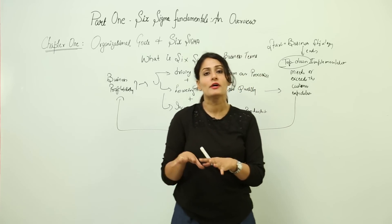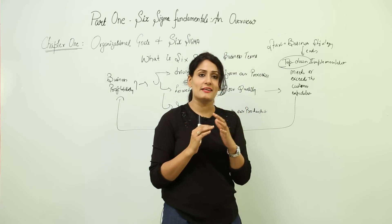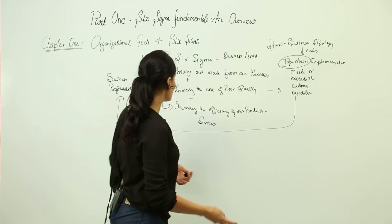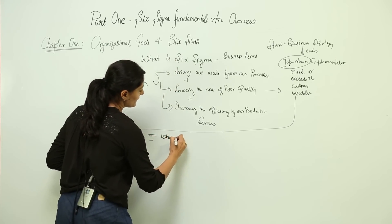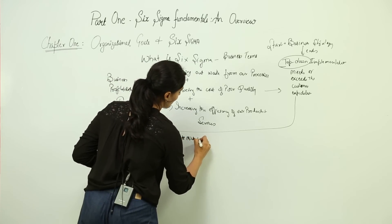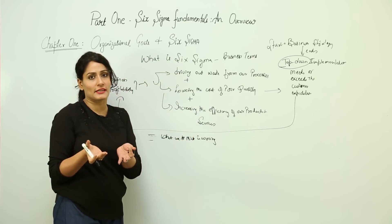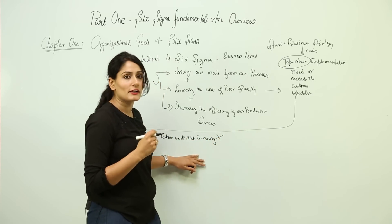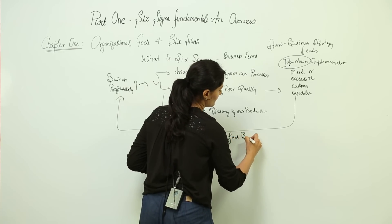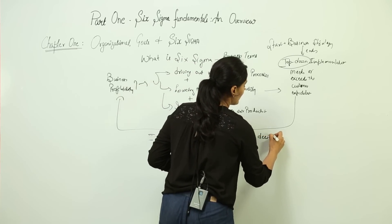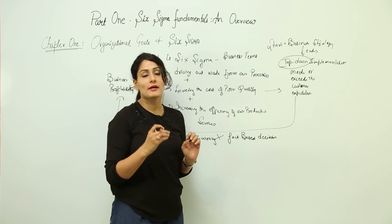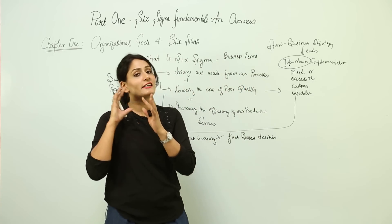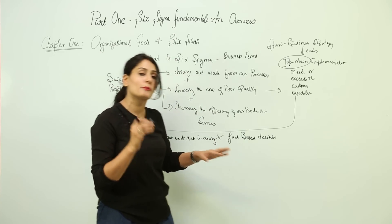Six Sigma replaces intuition-based decisions — what we think is wrong — with fact-based decisions, meaning what we know is wrong based on data. It uses data and data analysis techniques, listens to customers, and only then devises methods to improve products and services.